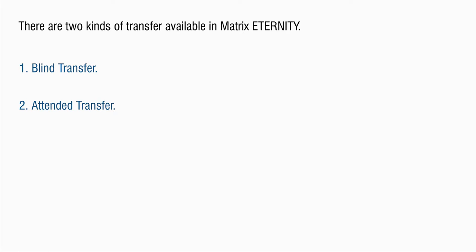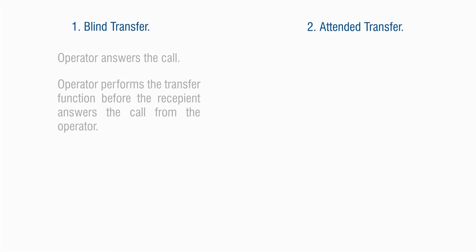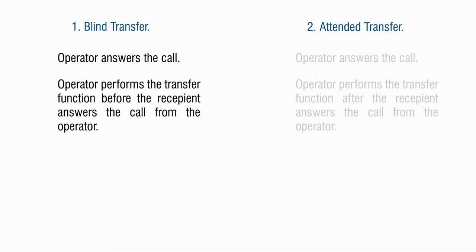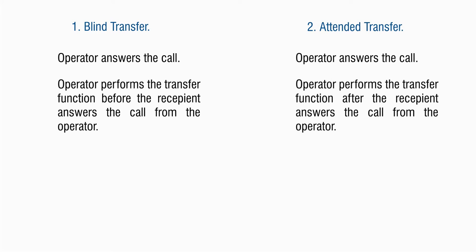There are two kinds of transfer available in Matrix: blind transfer and attended transfer. In blind transfer, the operator answers the call and performs a transfer function before the recipient answers the call. In attended transfer, the operator answers the call and performs the transfer function after the recipient answers the call from the operator.